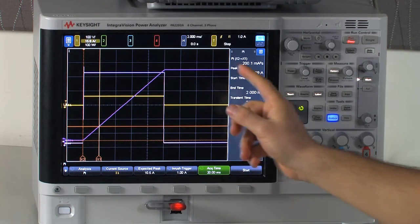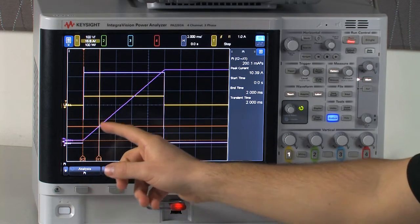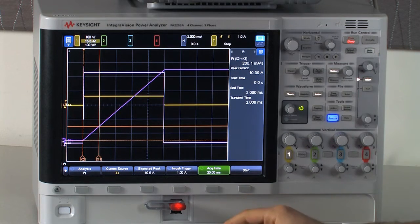The purple trace is the integral of I squared, which is I squared T. And you can see the energy rising throughout the inrush and capping out there.